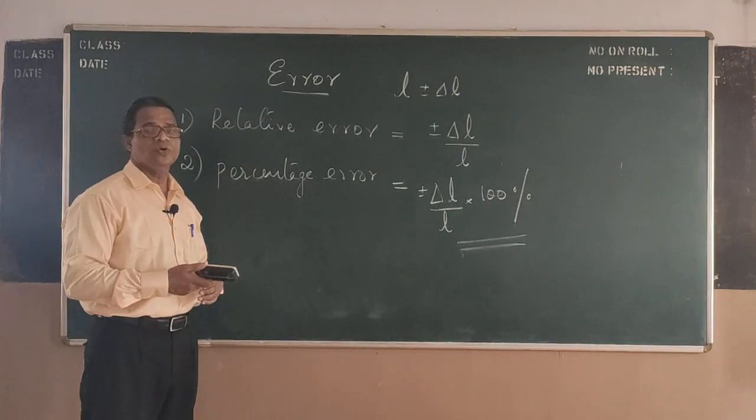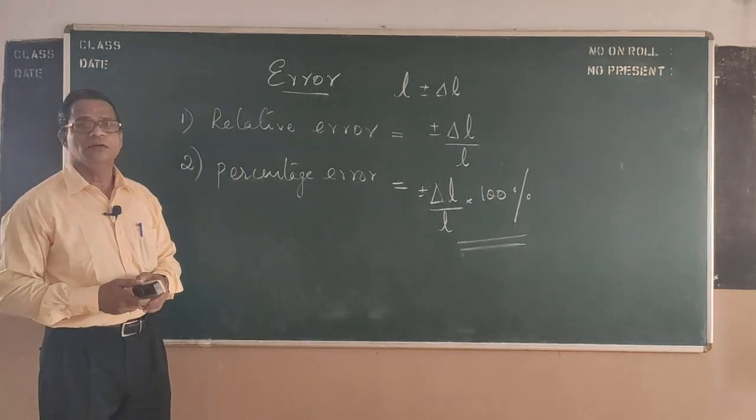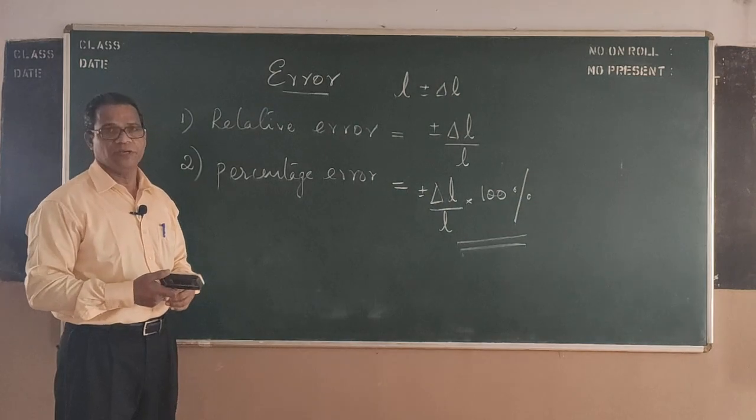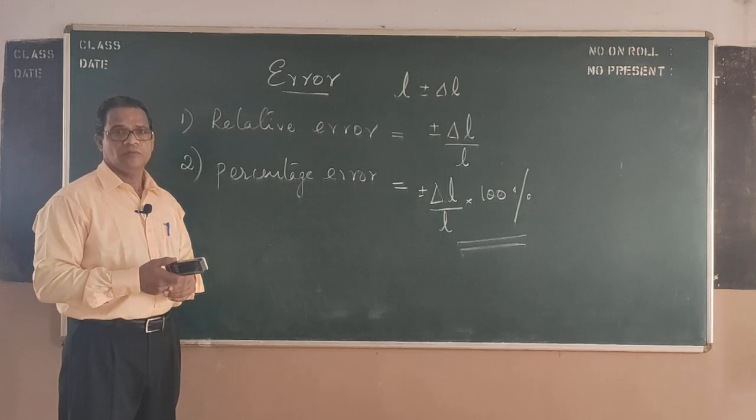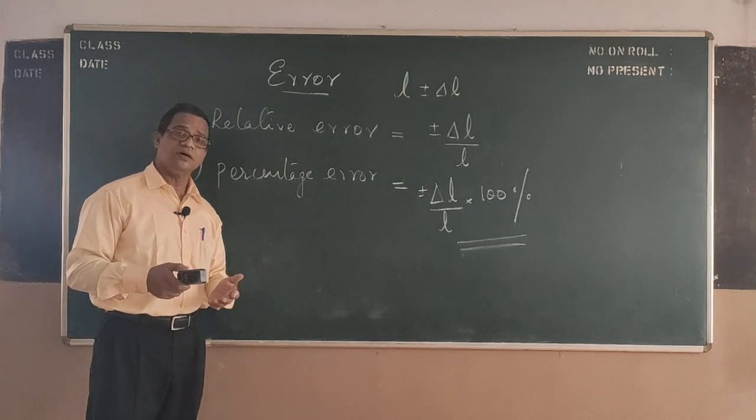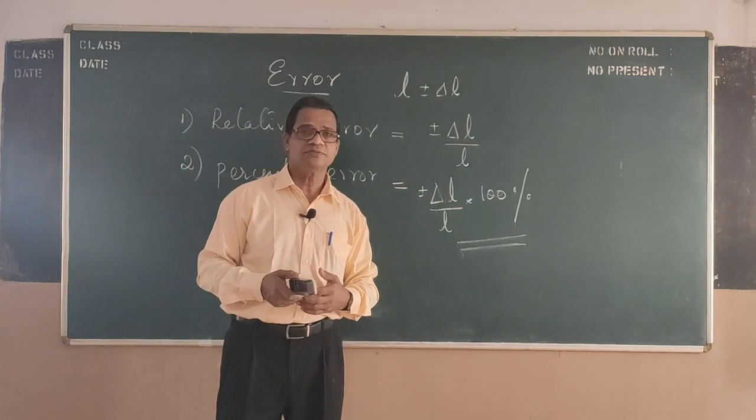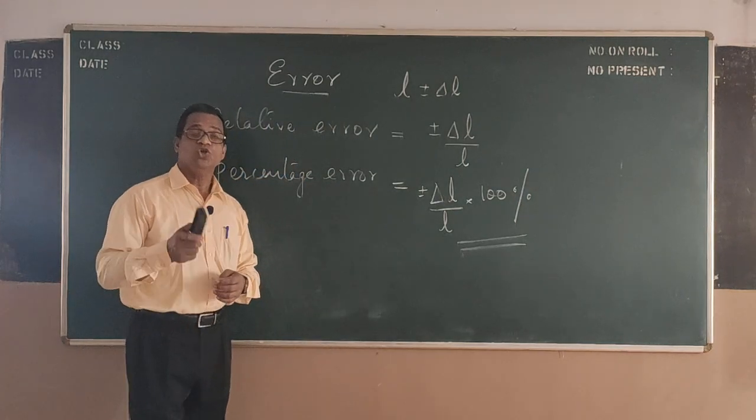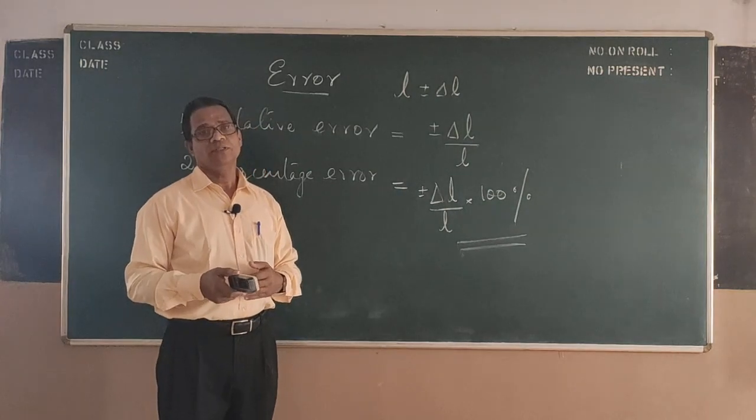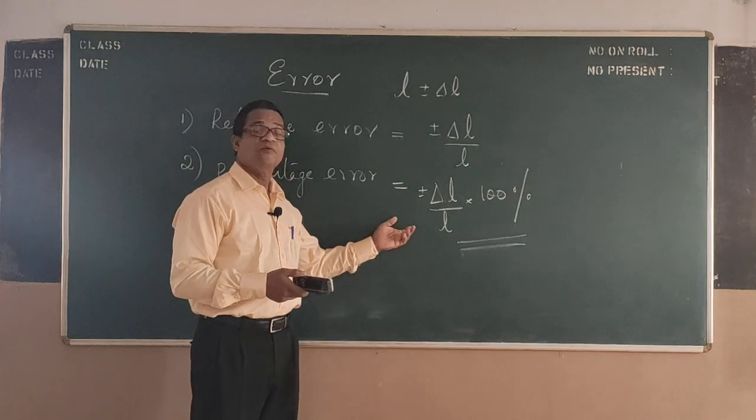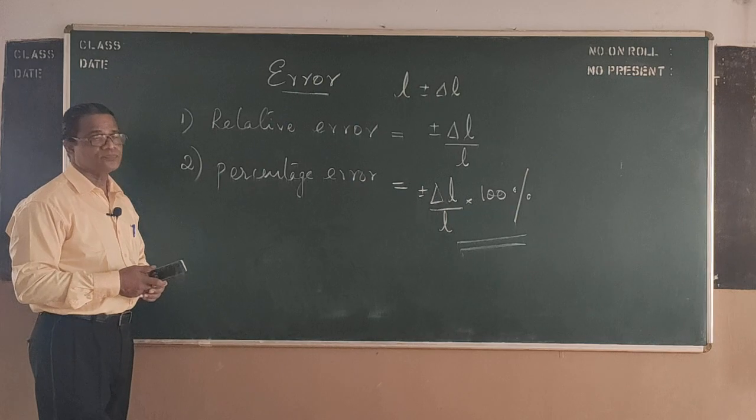Because when you go forward doing practicals in the lab, sometimes literature will be asking you to find the percentage error in your measurement. So you must be knowing what the percentage error is. But for all the lab experiments, you won't be able to measure the percentage error, because if you want to measure the percentage error, you must be knowing the actual value of your measurement. Then only you can go forward finding the percentage error.